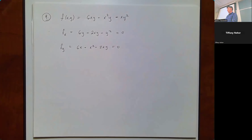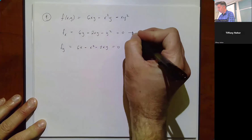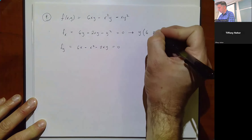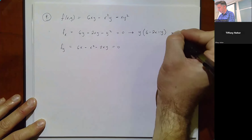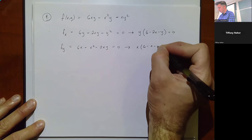Find the partial derivatives: fx = 6y - 2xy - y², and fy = 6x - x² - 2xy. Both are fairly complicated, but each can be factored. From fx, factor out y: y(6 - 2x - y) = 0. From fy, factor out x: x(6 - x - 2y) = 0.